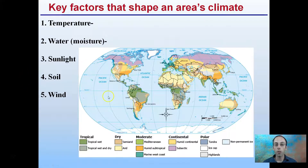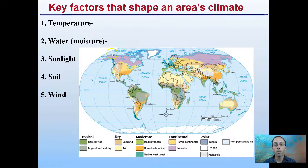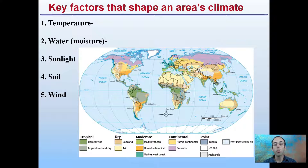Now sunlight might seem odd — we might think we're still getting sunlight everywhere on Earth — but keep in mind the different amount of sunlight that may occur at extremes at the pole regions. During the summer in the northern hemisphere, way up near the Arctic Circle area, they may get close to 24 hours of continuous sunlight. In the winter, they may get the flip of that: almost a complete day of darkness.